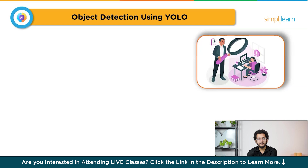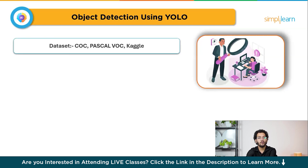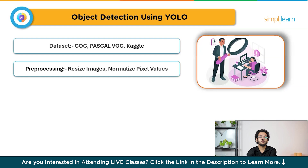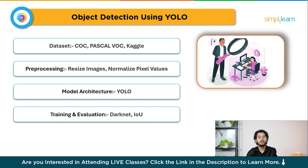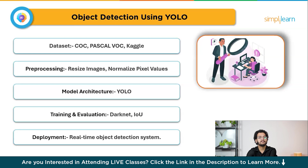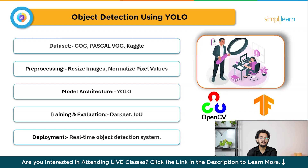To build this project: Step 1 is import dataset — use a dataset like COCO or PASCAL VOC, which contains labeled objects in images with bounding boxes. Step 2 is preprocessing — resize images and normalize pixel values, ensuring bounding box labels are appropriately formatted. Step 3 is model architecture — use the YOLO architecture, which splits images into a grid and predicts bounding boxes and class probabilities for each object. Step 4 is training and evaluation — train the YOLO model on labeled data using a framework like Darknet, and evaluate using intersection over union (IoU) and mean average precision (mAP). Step 5 is deployment — develop a system that processes video streams in real time, detecting objects and drawing bounding boxes. Tools: OpenCV, TensorFlow, Darknet. Skills gained: object detection, YOLO architecture, and real-time video processing.